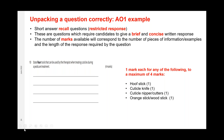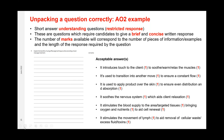Unpacking short answer recall questions — these have a restricted response requiring the learner to give a brief and concise written answer. The number of marks corresponds to the number of pieces of information required. For example, Question 10 asks the learner to state four tools that can be used by a therapist when treating cuticles during a pedicure treatment. It's looking for direct answers — one mark each — so: hoof stick, cuticle knife, cuticle nippers or cutters, orange stick or wooden stick. If they only write two tools, they only get two marks. This is a typical AO1 question.